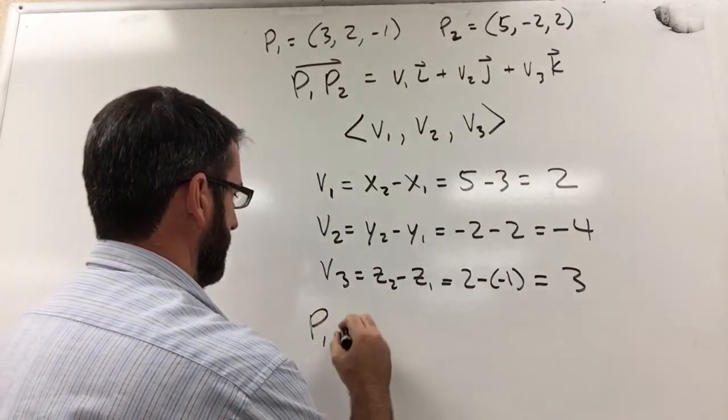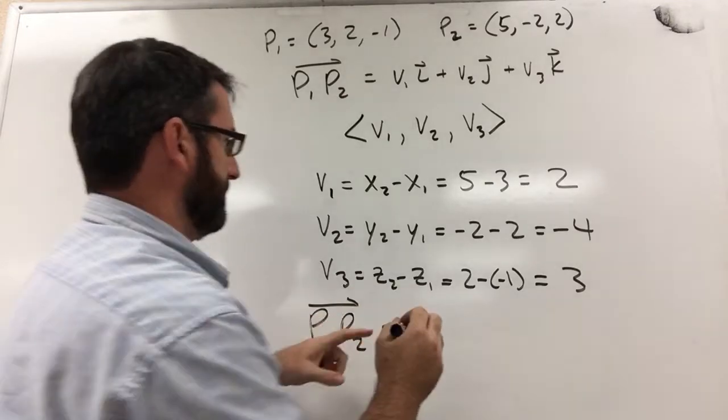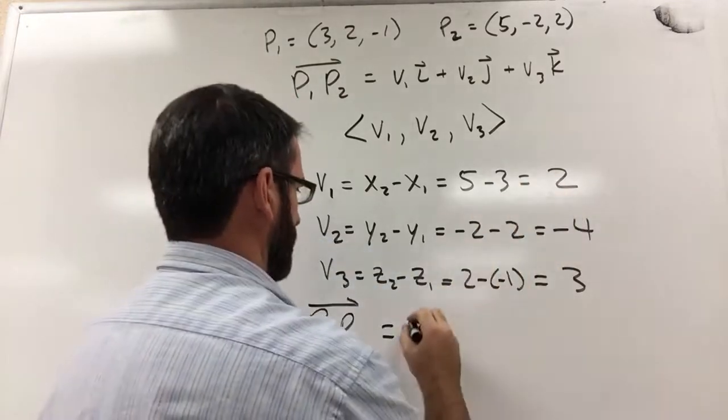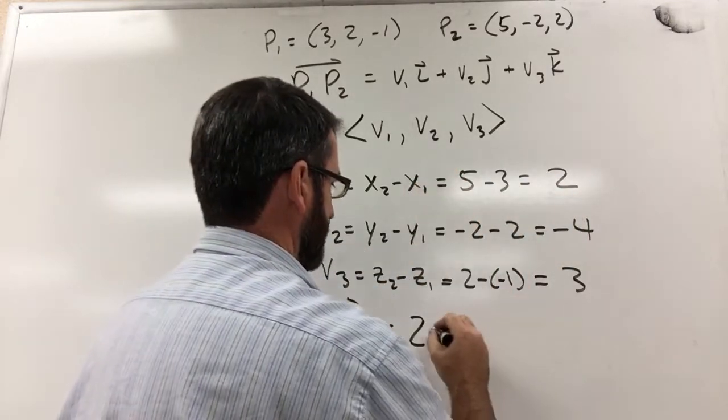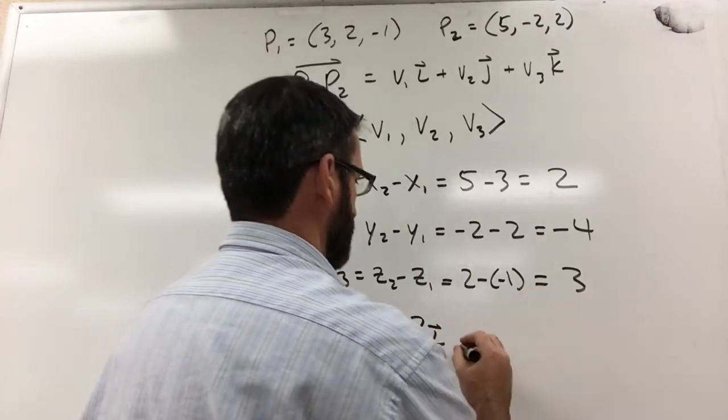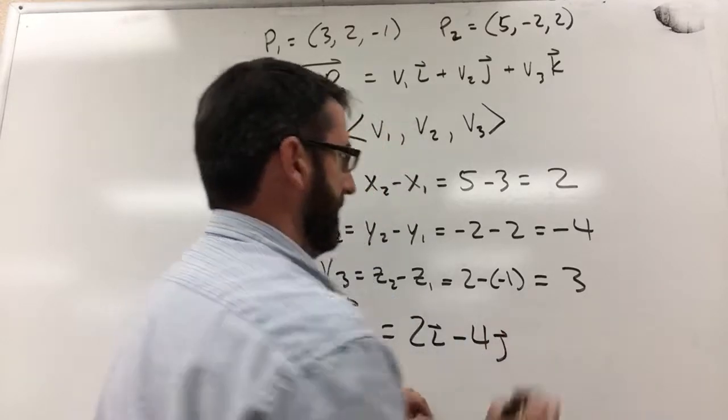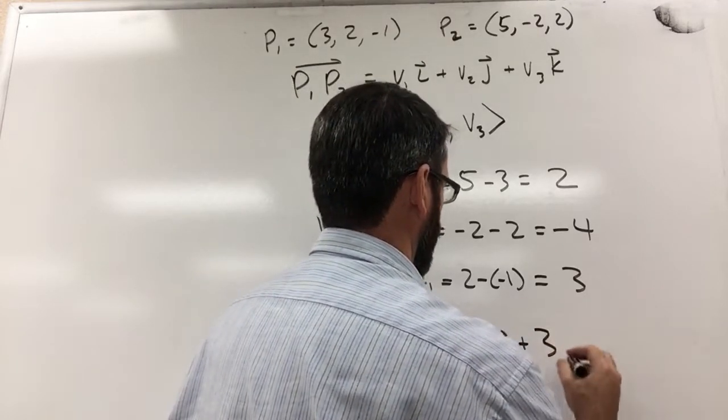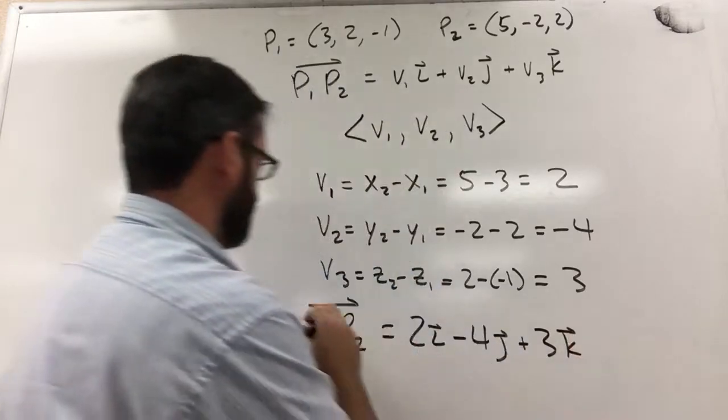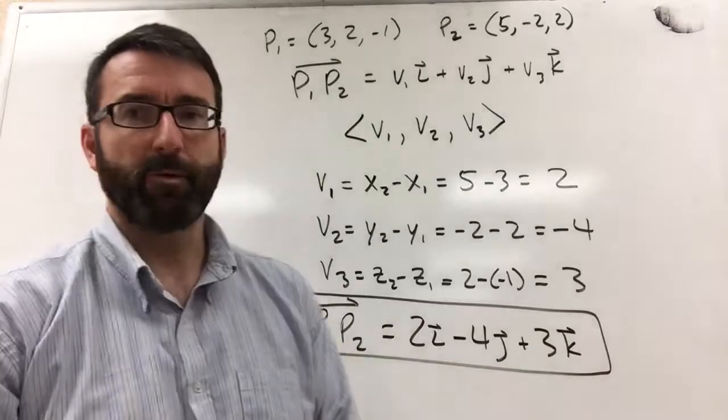And so our vector, P1, P2, is going to be this v1, 2, times our unit vector i, minus 4 times our unit vector j, plus 3 times our unit vector k. And that's our answer in that form.